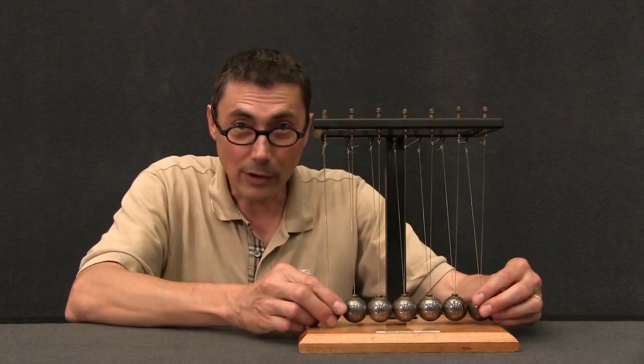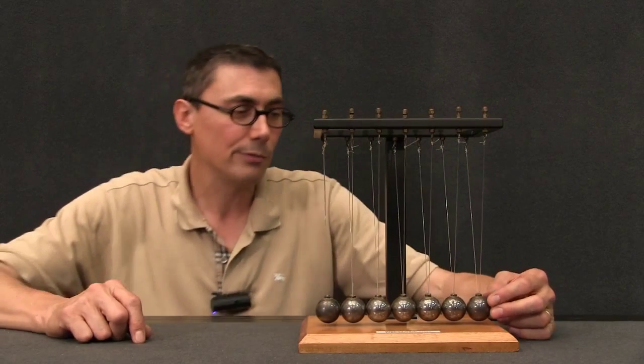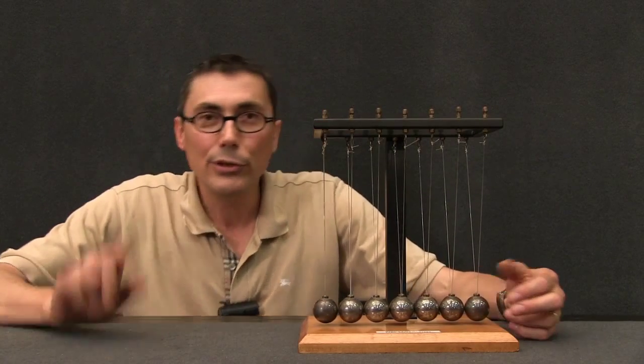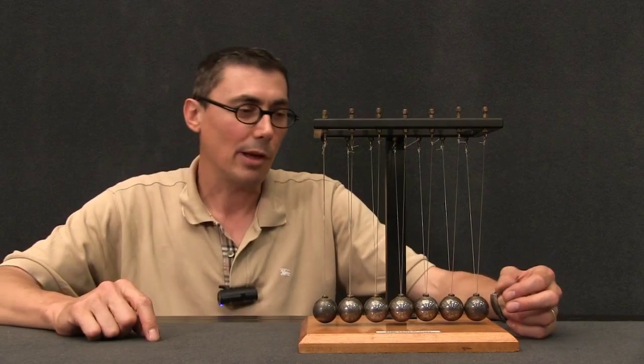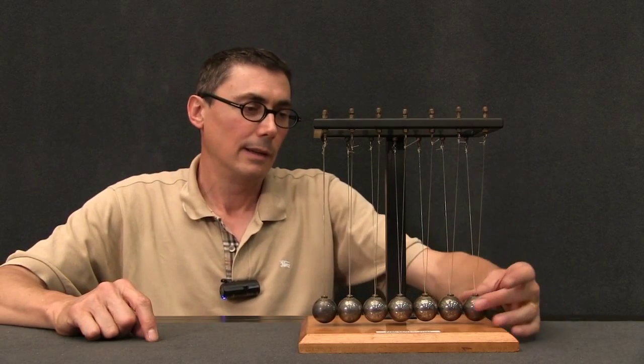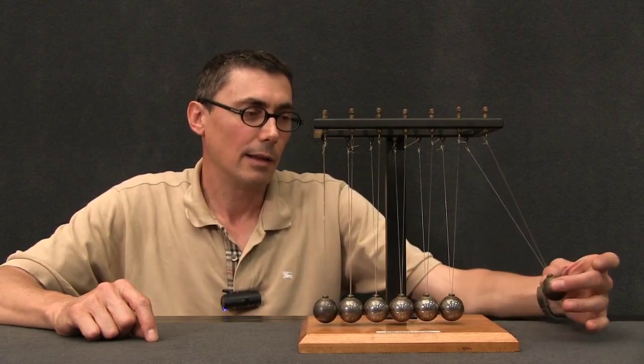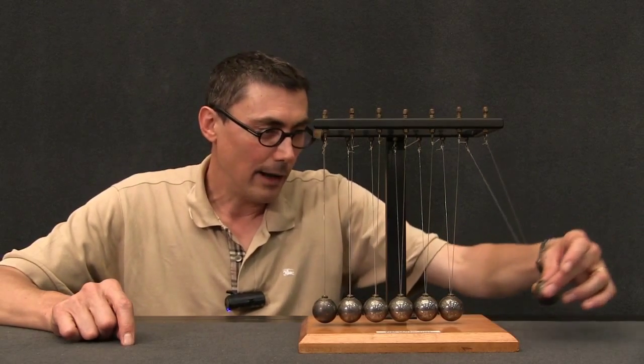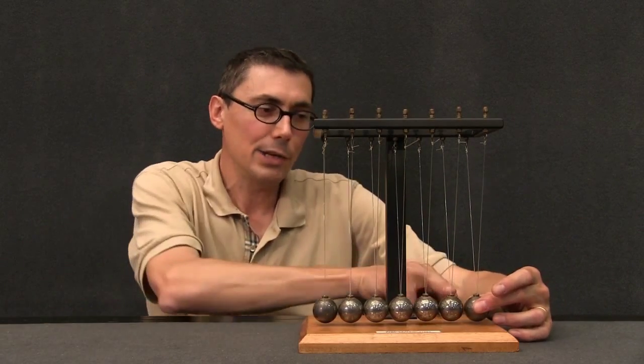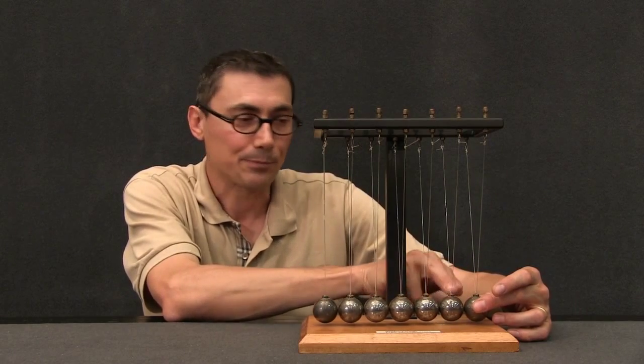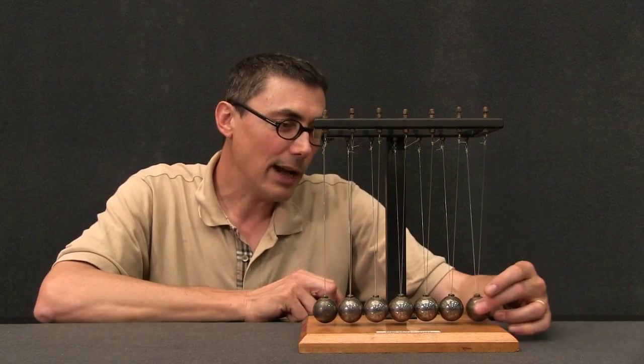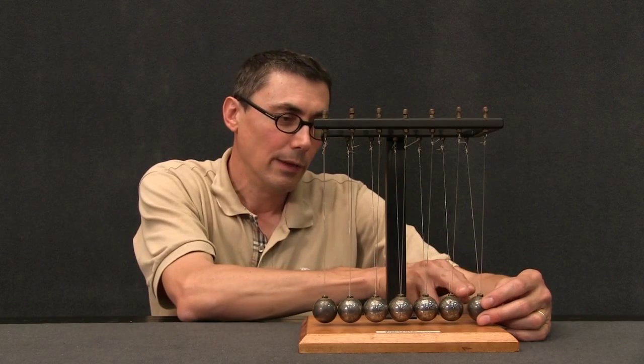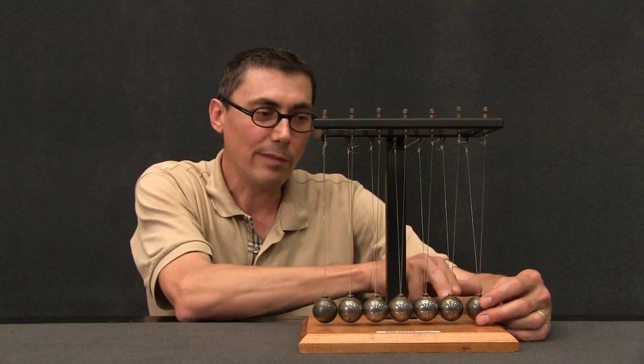Now, when we've got this complicated situation with a lot more balls, we can still use that little rule of thumb, even though it applies to two balls. Think of it this way. If I lift one ball up, it swings down, I get a collision between these two balls here. So immediately after the collision, this ball, these balls swap their velocities.